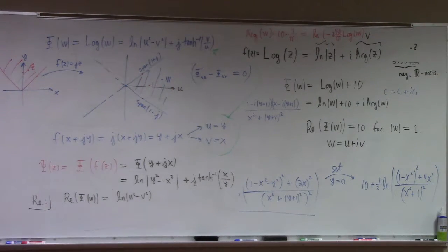Put v equal to 0, what happens? We get 2 times log u, or log of u squared. So it increases as you go on out that way.